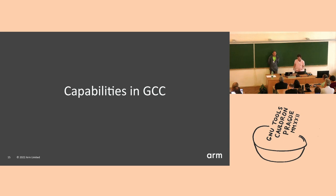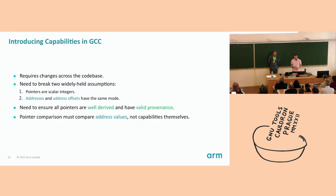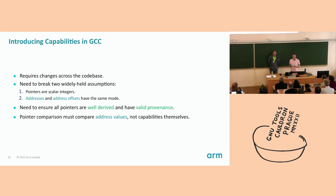I should note that Richard Sandiford did the design for GCC, so we're indebted to him. Introducing capabilities in GCC presents several challenges requiring changes across the code base. We have to break two very widely held assumptions in GCC. The first is that pointers and scalar integers are interchangeable — this is no longer the case with capabilities. The second is that addresses and address offsets have the same mode; breaking this assumption particularly affects the RTL parts of the compiler, where we have to tease apart which components of an address calculation are the offsets and which is the base address. We also have to ensure that all pointers are well-derived and have valid provenance — you can no longer just convert from an integer type and expect to get a valid pointer, and the compiler will ICE if such conversions are attempted.